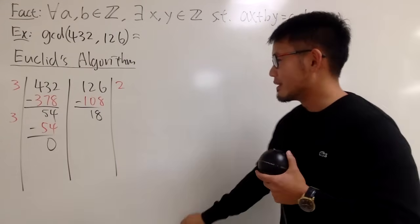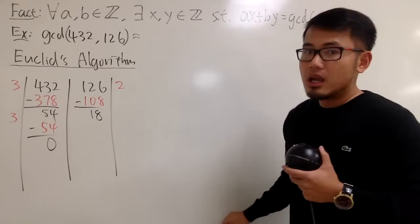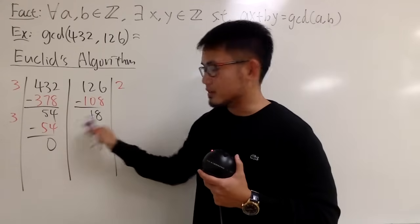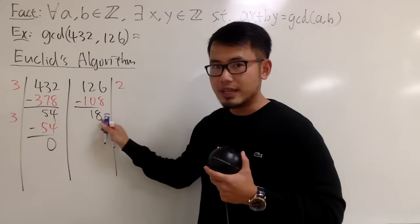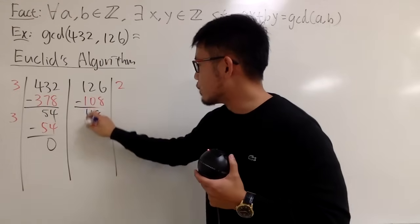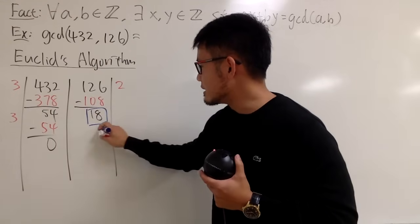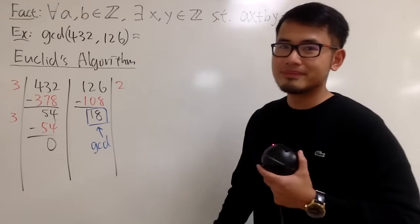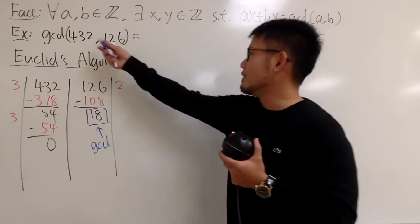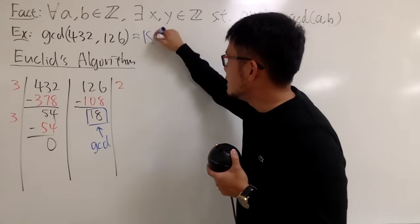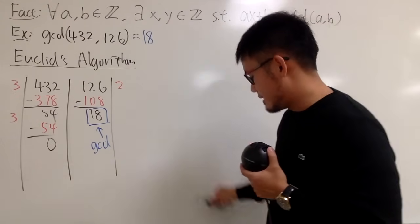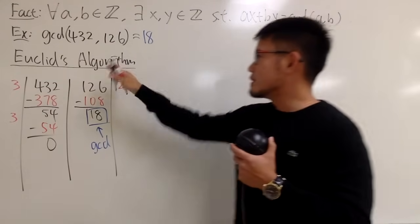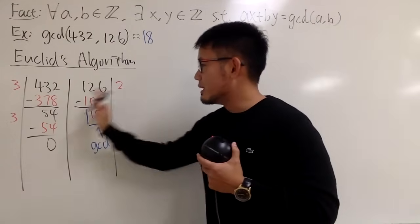This will always work. The number before the 0 — which is 18 in our case — is exactly the greatest common divisor. So the GCD of 432 and 126 is 18. This is the Euclidean algorithm, and I think this layout is a lot nicer.